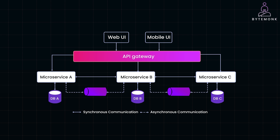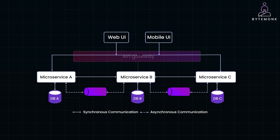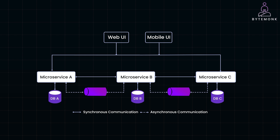In a microservices architecture, one might consider allowing clients to directly invoke the services they need. This seems simple at first glance. However, this approach comes with significant challenges.